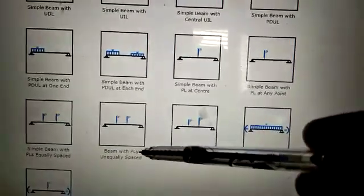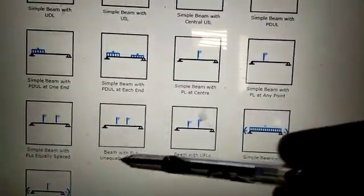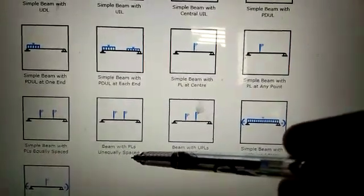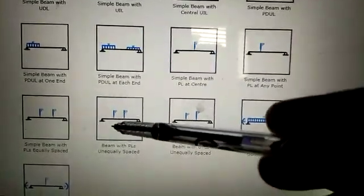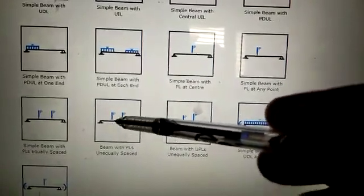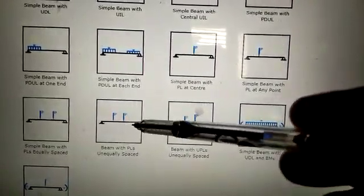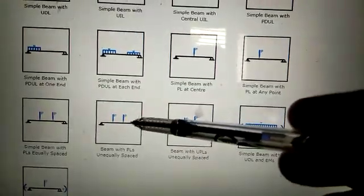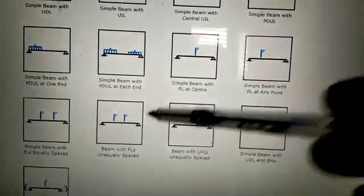But here, in this case, beams with point load, they are unequally placed. Unequally placed means this distance will be, suppose small a, this distance will be suppose small b and this distance will be c. So, the three lengths are different.